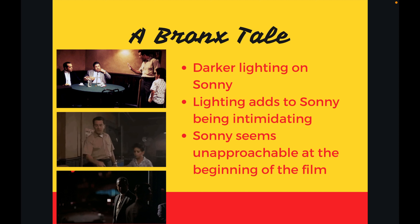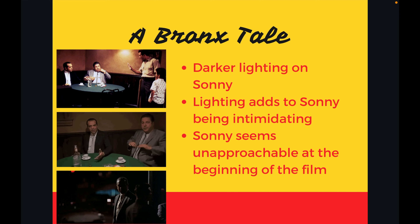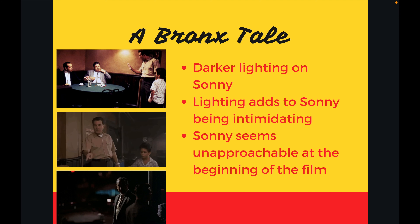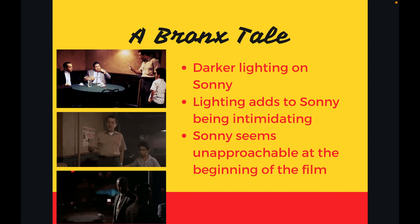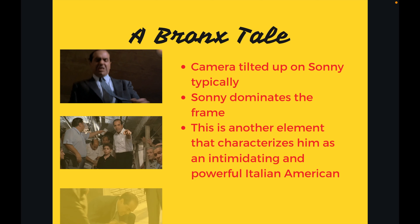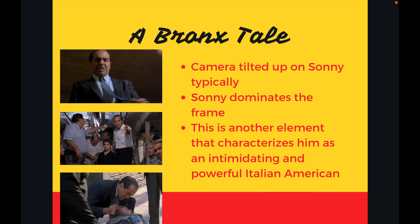Sonny is portrayed as a powerful Italian-American mobster and is typically seen in darker lighting. Schatz explains this to be a key element of depicting the gangster in film. Especially in the beginning of the film, this adds to the concept that Sonny's power is great and unattainable for most, and also makes him seem immensely intimidating. In scenes where Sonny is fighting, the camera is tilted up on him, typically in a close-up or medium shot, allowing his face and body to dominate the frame. This accentuates the power dynamics of the neighborhood. For instance, these types of shots occur when Sonny and his men are fighting the biker gang in their bar, with Sonny dominating the frame while finishing off every single one of them.